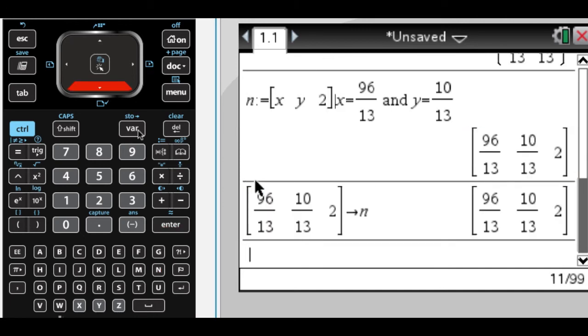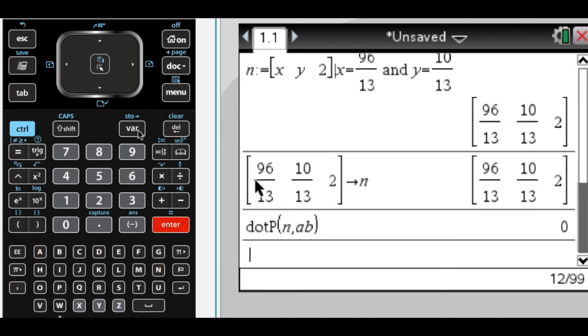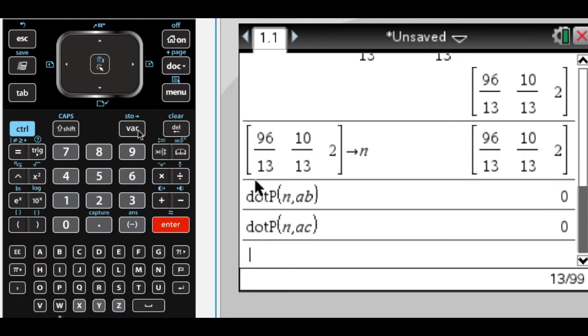So let's confirm that the dot product of N and AB is 0, and the dot product of N and AC is 0, which it is.